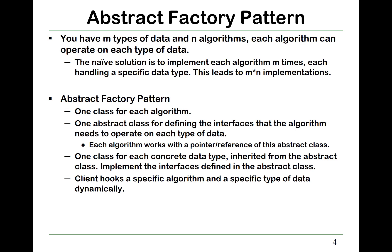The way to solve this is the abstract factory pattern. Imagine that you have M types of data and N types of algorithms, and each algorithm can operate on each type of data. The naive solution is to implement each algorithm M times — one implementation for each data type — leading to M×N implementations. Using the abstract factory pattern will allow us to reduce this implementation complexity from M×N to M+N.